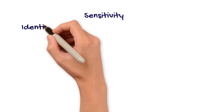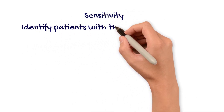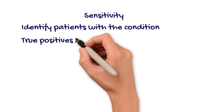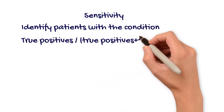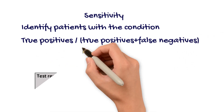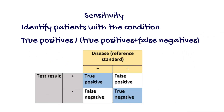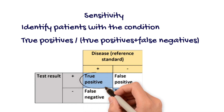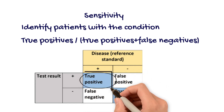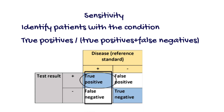Sensitivity is a test's ability to identify patients with the condition. Sensitivity is calculated by dividing the number of true cases identified by the test by all the positive cases confirmed by the reference standard. A test with high sensitivity will correctly identify most people who have the condition and will have few false negatives. False negatives are people who have the disease but test negative.